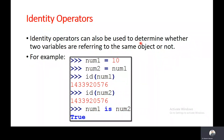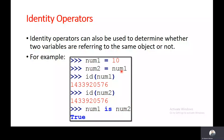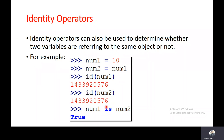Identity operators can also be used to determine whether two variables are referring to the same object or not. Here I have taken num1 assigned 10, and then assigned the value of num1 into another variable num2. I checked the id of both variables and compared them using the identity operator 'is', and it returns true, indicating that both variables are pointing to the same object and the same memory location.